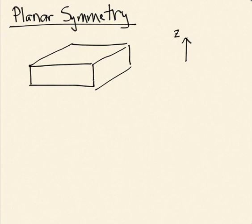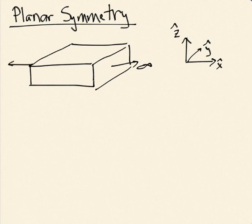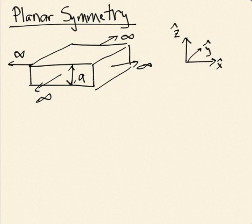Let's call z-hat up, x-hat to the right, and y-hat into the page. For this slab, we'll say it's infinite in the x and y directions — it extends off to infinity in both directions with no variation — and it has finite extent in the z direction. Let's say it has a thickness of a.